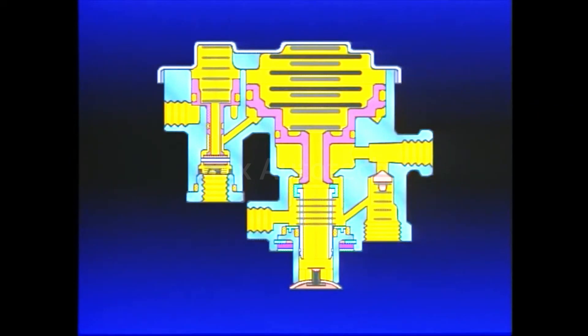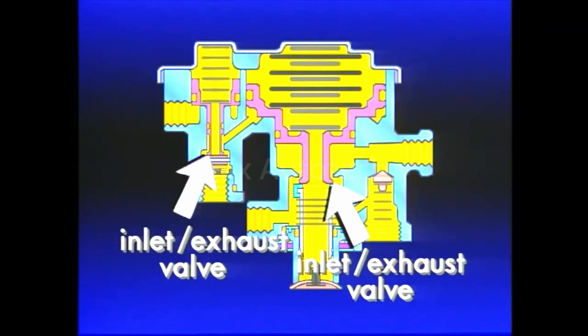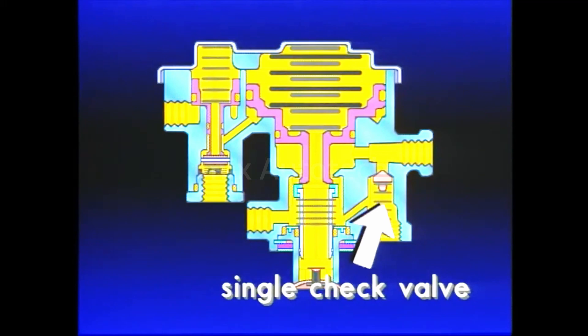Inside, the SR1 contains two pistons, we'll call them Piston A and B. Below each piston is an inlet exhaust valve, and above are the springs. The final component is a single check valve.